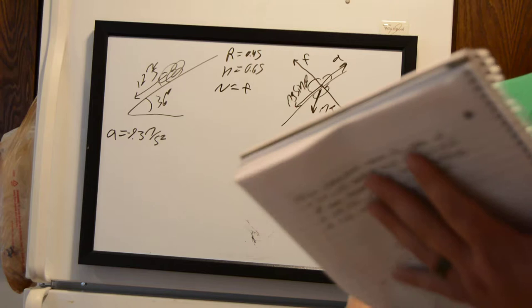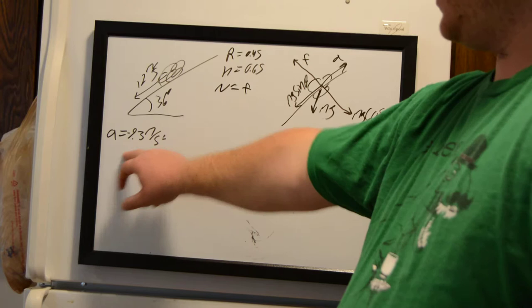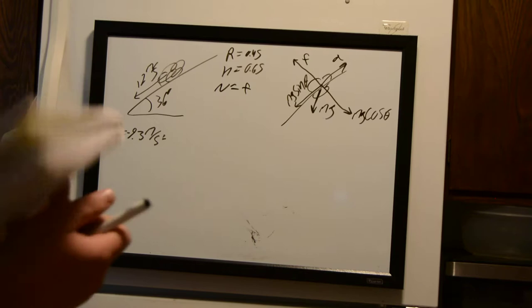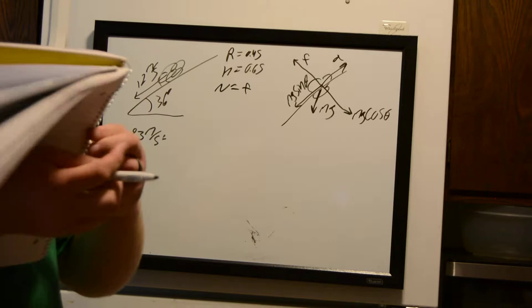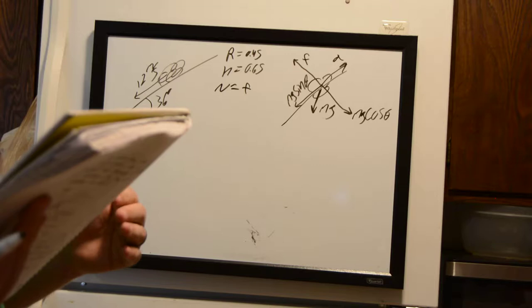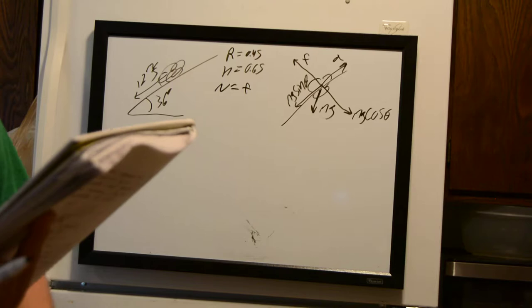All right, so now we have 5.30 part B. I left all this stuff up here and have my acceleration from part A right there, just so we have all the information we need. This part of the question is really fun — it says once the rocks reach the highest point, will they stay there or slide down the hill?